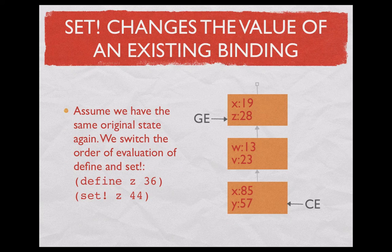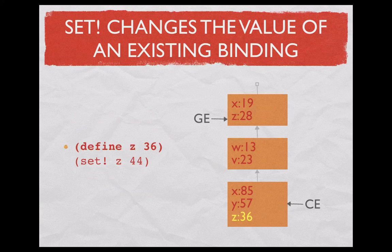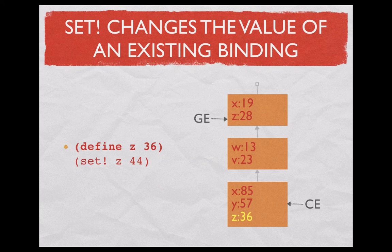Just to show the difference between these two. We go back to the original diagram, the environment. And then execute the set and the define in the reverse order. We first define z as 36 and then evaluate set. Let's see what happens. We know that define adds a binding to the current frame. So that's easy. Now we have defined z as 36.